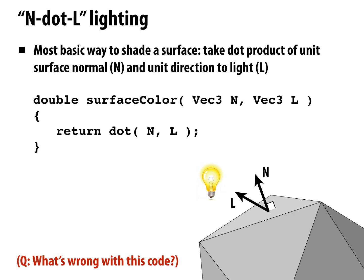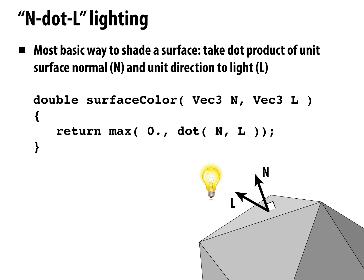Here's pseudocode for this: just return n dot l. But what's wrong with this? If l is pointing in nearly the opposite direction from n, the dot product goes negative. Can we have negative irradiance or negative energy? That doesn't make physical sense. So we should return the maximum of zero and that dot product. If it goes negative, we just return zero.